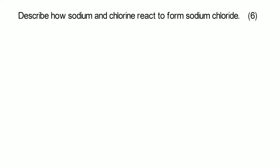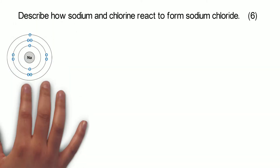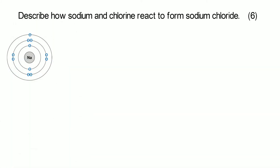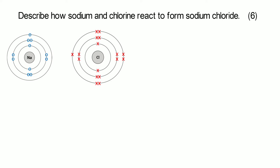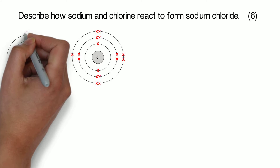The first one we're going to start with is sodium and chlorine. Describe how sodium and chlorine react to form sodium chloride. Sodium is in group one, so it has one electron in its outer shell and it wants to lose that electron. Chlorine is in group seven, so it has seven electrons in its outer shell and it wants to gain one electron.